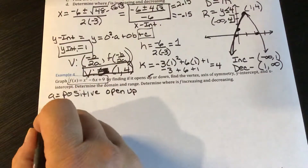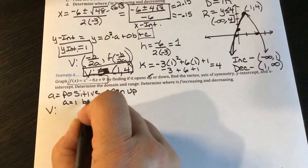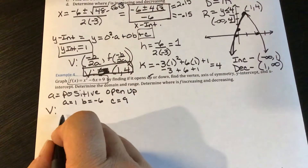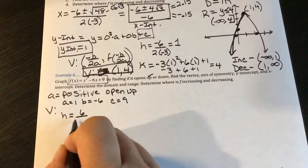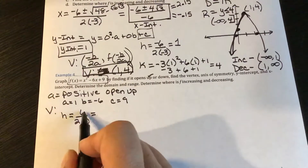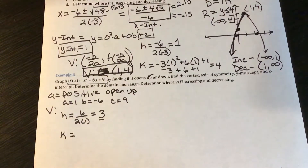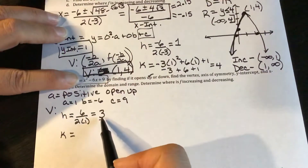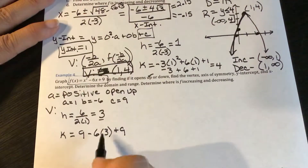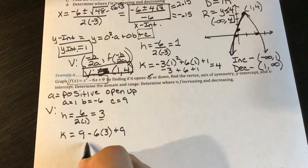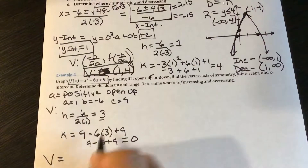Finding the vertex: with a equal to 1, b equal to negative 6, and c equal to 9, the h-coordinate is negative b over 2a, which is the opposite of negative 6 over 2 times 1, giving positive 6 over 2, which equals 3. The k-value comes from plugging x equals 3 into the equation: 3 squared minus 6 times 3 plus 9 equals 9 minus 18 plus 9, so k equals 0. The vertex is (3, 0).